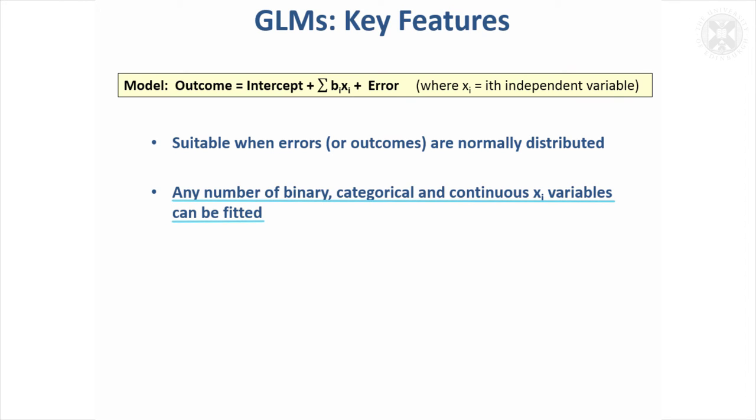You could have any number of variables on the right hand side of the equation and they can be binary variables where there's two possible outcomes. There might be several categories or continuous variables.